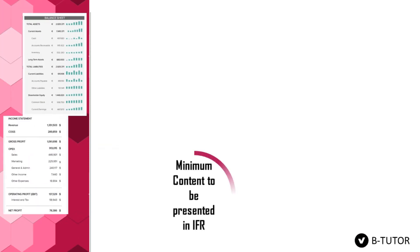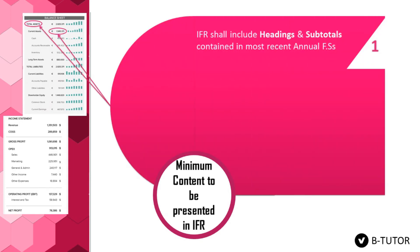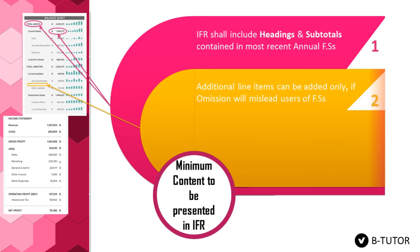An entity can present an interim financial report using either a complete set or a condensed set. If an entity adopts the second option, it must report the minimum content. The minimum content to be presented in IFR includes: first, interim financial statements shall include the headings and subtotals contained in the most recent annual financial statements. Second, any additional line items can be added only if they are material.